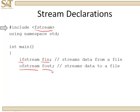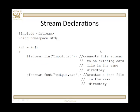ofstream fout will create a stream that will stream data to a file. Even though you've created these streams, they're not connected to anything — you have to connect them. There are several ways to do this. You can do it during the creation of the stream: ifstream fin("input.dat") will connect the stream to an existing data file in the same directory.